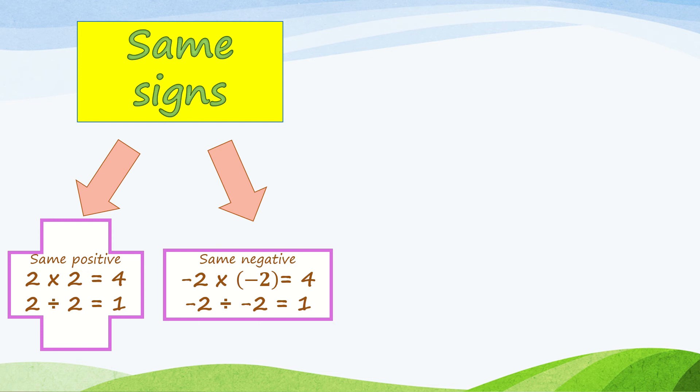Negative 2 divided by negative 2 is positive 1. If the two numbers are the same sign, your answer is positive.